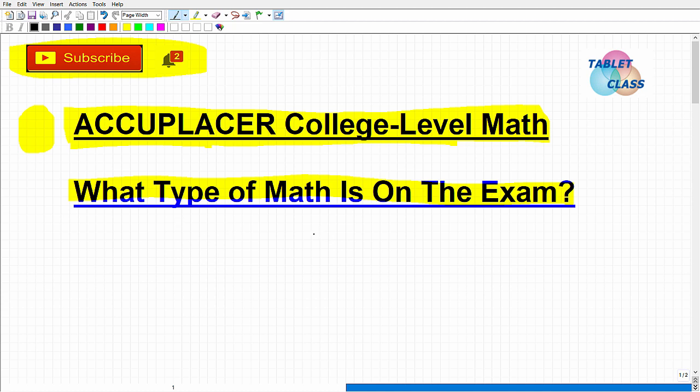Also, I have a specific course for the ACCUPLACER college-level math exam, a prep course for that. I'll leave a link in the description if you're interested and you want to check that out. But with that being said, let's get into it. So what type of math is on the college-level math exam for the ACCUPLACER? Well, basically, the best way to kind of explain this, I think the easiest way, is to look at high school math. So high school mathematics, pretty much, if you look at what most students take in high school,